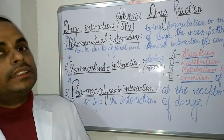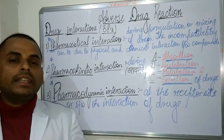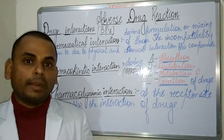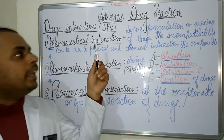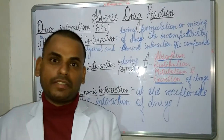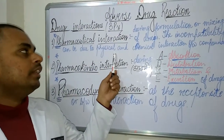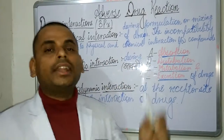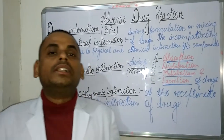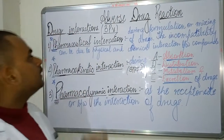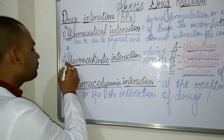The first P of the three P's refers to pharmaceutical interaction. These pharmaceutical interactions are basically seen during the formulation or mixing of drugs, either at pharmaceutical companies or during manufacturing. The incompatibility can be due to either a physical or a chemical interaction between the compounds, and this kind of drug interaction occurs at the pharmaceutical company level.